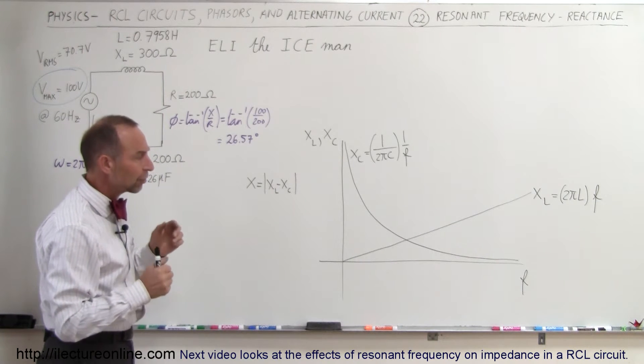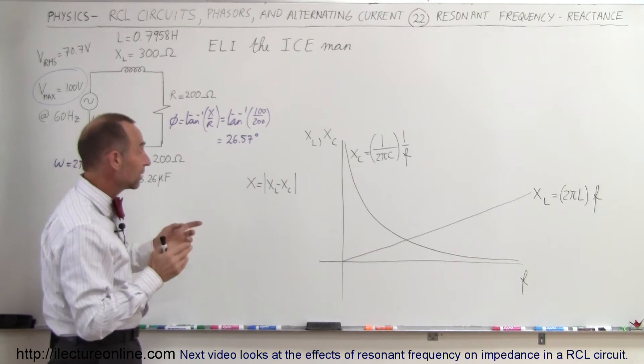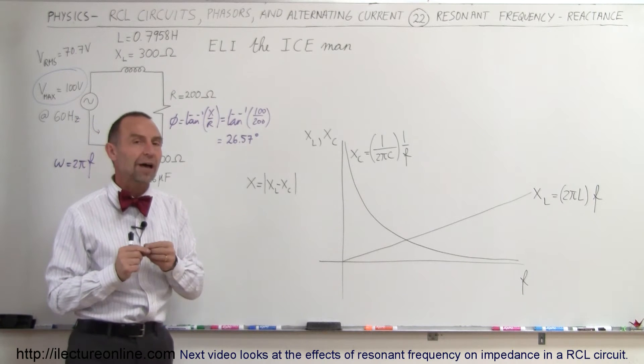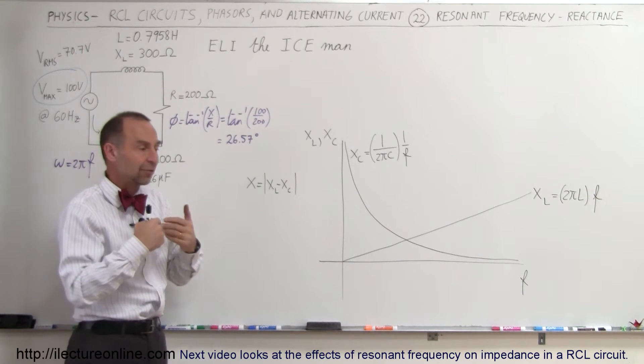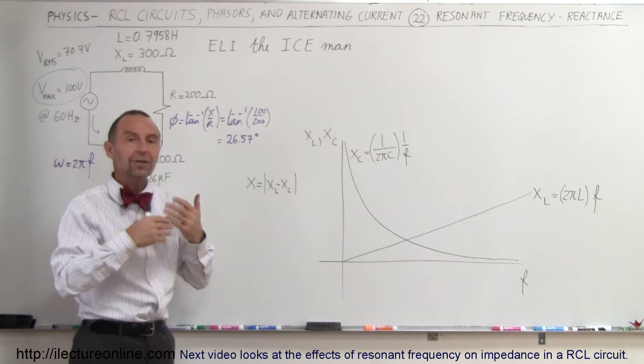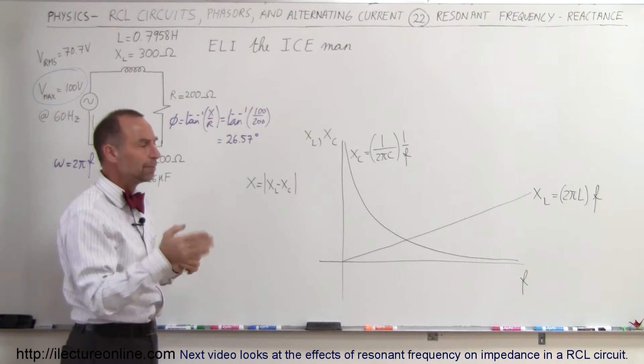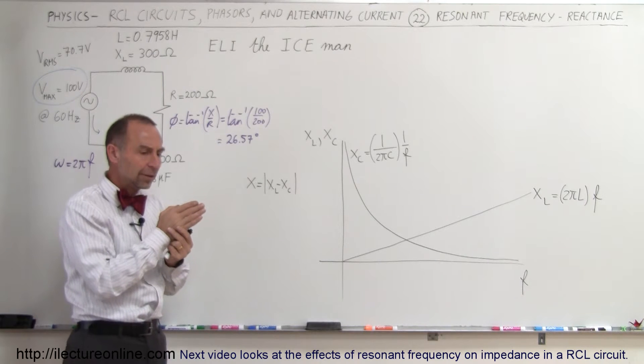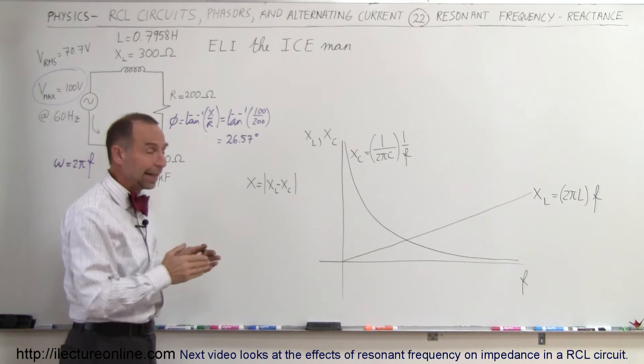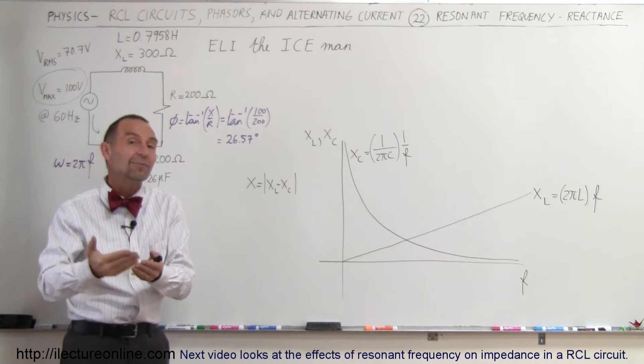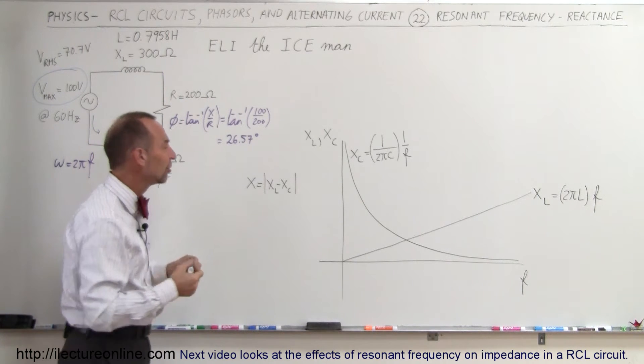The total reactance of the circuit is actually the difference between the two values, not the sum of the two. They activate at 180-degree phase difference. The inductive reactance is 90 degrees ahead of the resistor, and the capacitive reactance is 90 degrees behind the resistor, so they're 180 degrees out of phase.